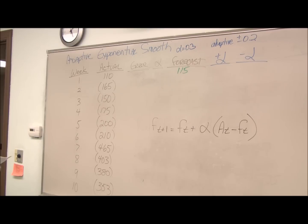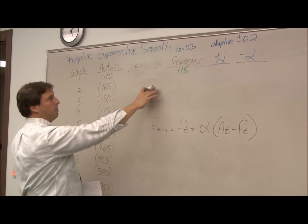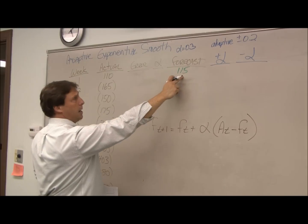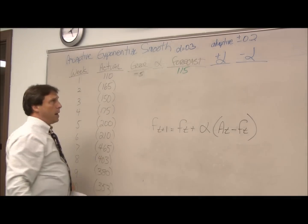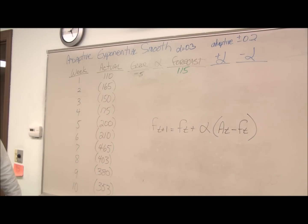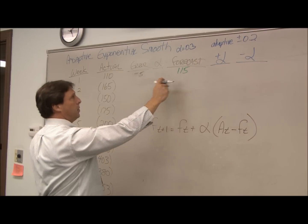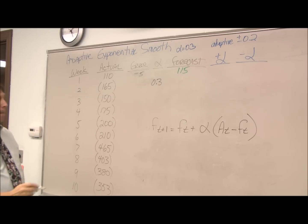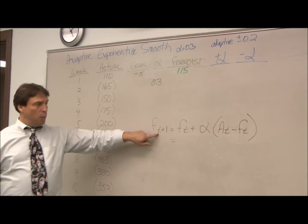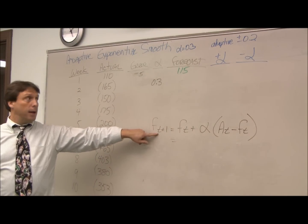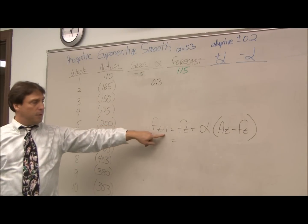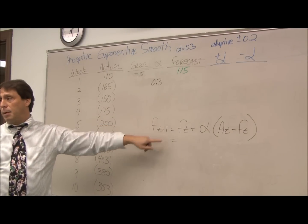The first thing we can calculate is the error. Our error is our actual amount minus how much we had forecasted, or negative 5. We're going to do the forecast for week 2, so we're going to start out with an alpha 0.3. F sub t1 stands for the forecast for the next period, so we're in period 1 doing the forecast for week 2.